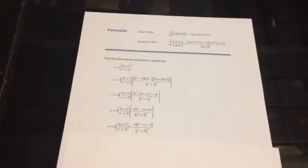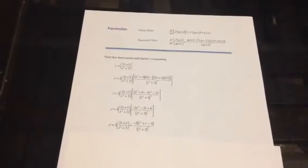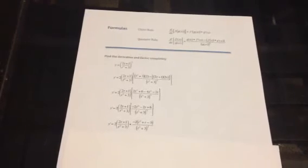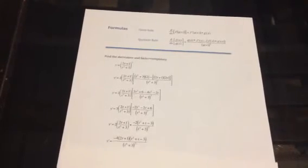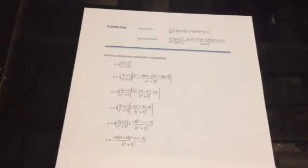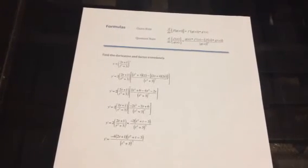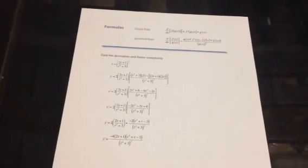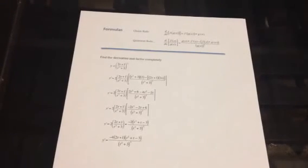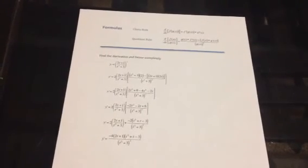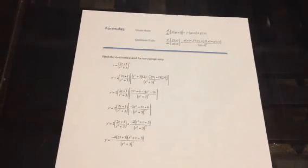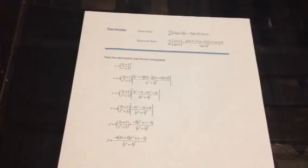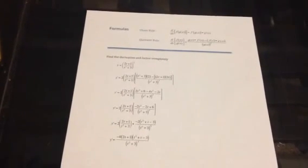We have a common factor of negative 2. We will factor out negative 2 to give us negative 2 times the quantity (t squared plus t minus 3). To combine it into one complete factor, we will multiply 2 times negative 4, which gives us negative 4, multiplied by the quantity (2t plus 1), multiplied by the quantity (t squared plus t minus 3), all over the quantity (t squared plus 3) to the power of 3.